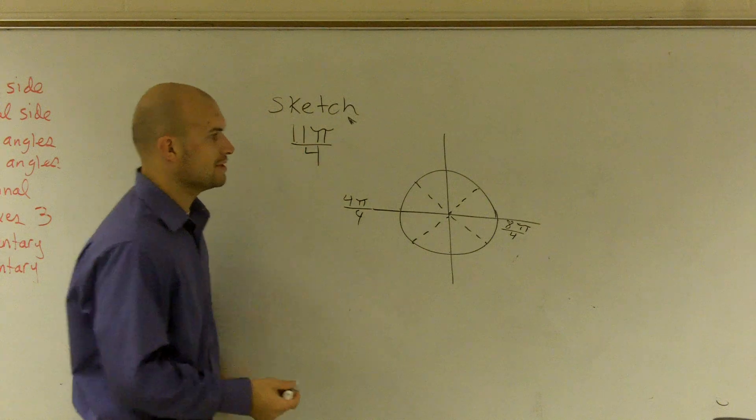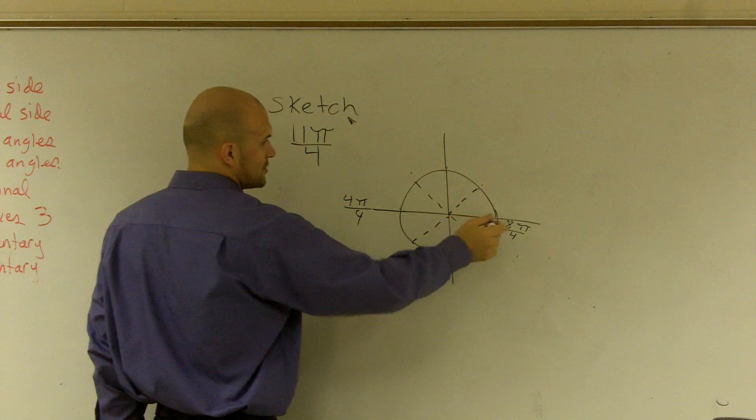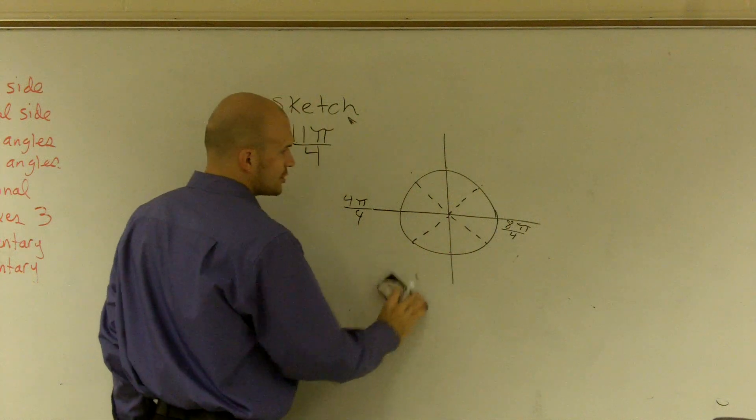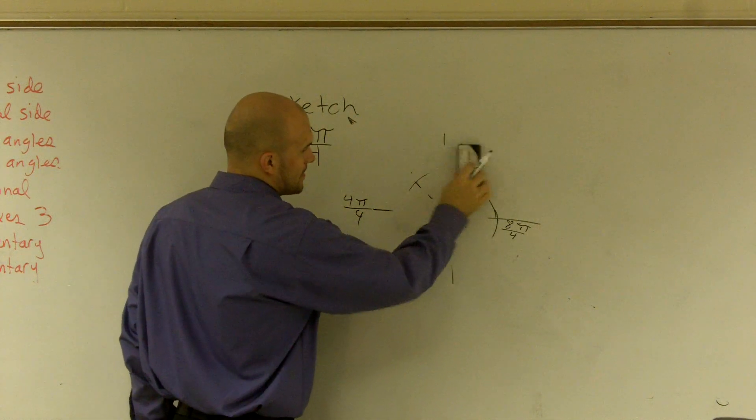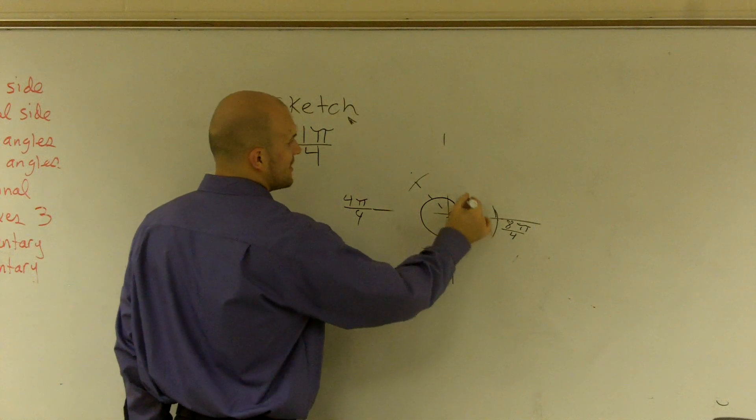Then if I wanted to keep on continuing to 11, this would be 9, 10, 11. So what my circle actually looks like, my angle, is going to go around the circle twice. It's going to go all the way around once, and then it's going to continue to here.